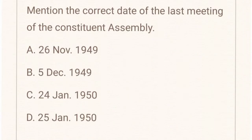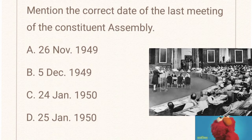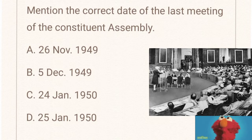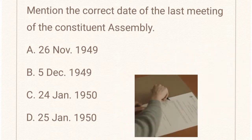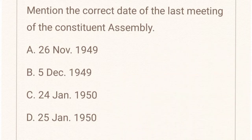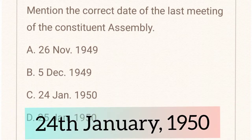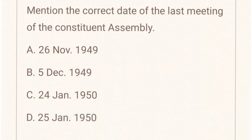The next question is: what is the correct date of the last meeting of the Constituent Assembly? Options are 26th November 1949, 5th December 1949, 24th January 1950, or 25th January 1950. The Constituent Assembly completed drafting the Constitution in two years, eleven months and eighteen days. The last session, the 11th session, was held on 26th November 1949. However, the Constituent Assembly reconvened on 24th January 1950, when the members signed the Constitution of India. So the correct answer is option C: 24th January 1950.